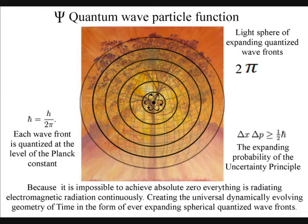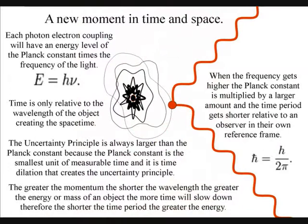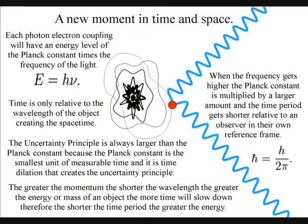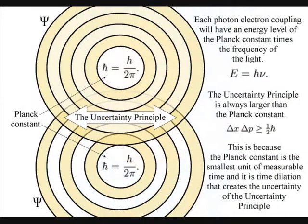The greater the momentum, the shorter the wavelength, the greater the energy or mass, and time will slow down. Therefore, the shorter the time period, the greater the energy. As the frequency gets higher, the wavelength gets shorter, and also the time period gets shorter, relative to an observer in their own reference frame. Each photon-electron coupling will have an energy level of the Planck constant times the frequency of the light. The uncertainty principle is always larger than the Planck constant, because the Planck constant is the smallest unit of measurable time, and it is time dilation that creates the uncertainty principle. Because of time dilation, the energy of the oscillations at high frequency falls to zero as the frequency of the radiation gets bigger.